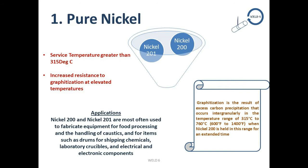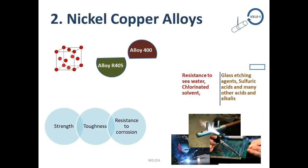Nickel 200 and Nickel 201 are most often used to fabricate equipment for food processing, the handling of caustics, and for items such as drums for shipping chemicals, laboratory crucibles, and electrical and electronic components.